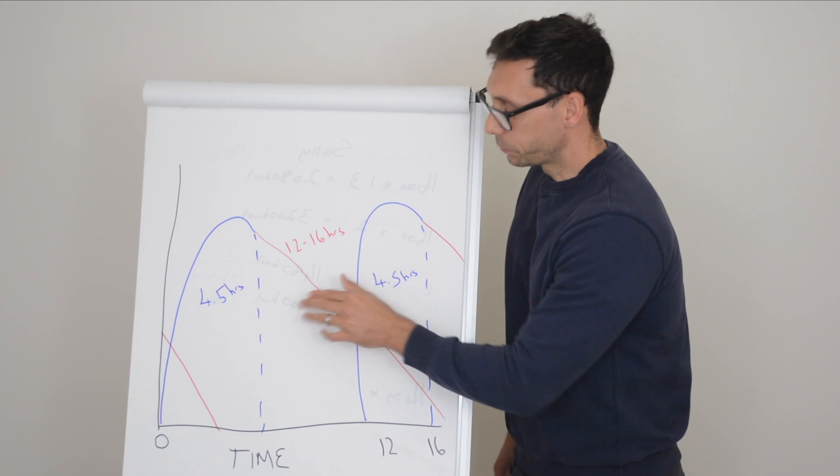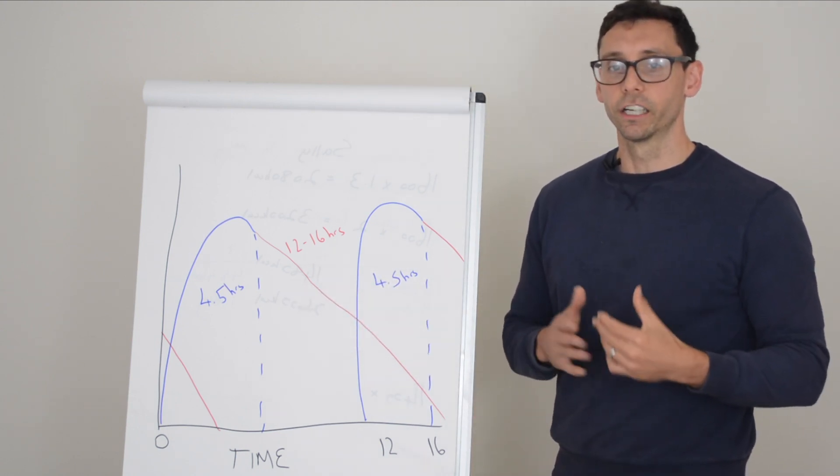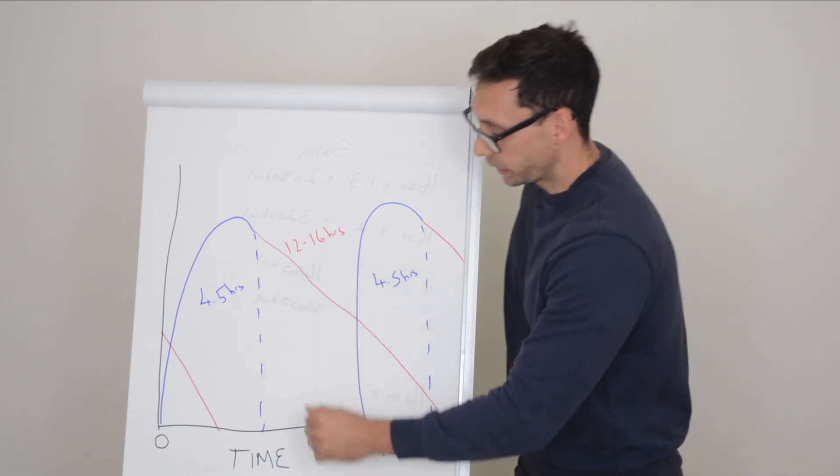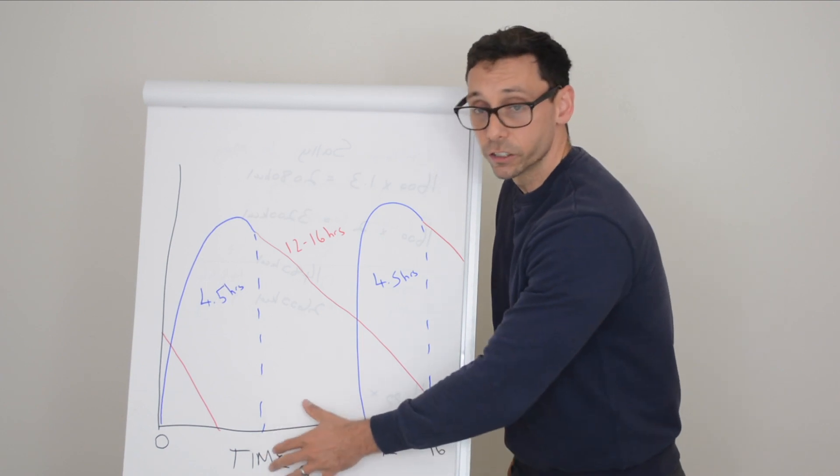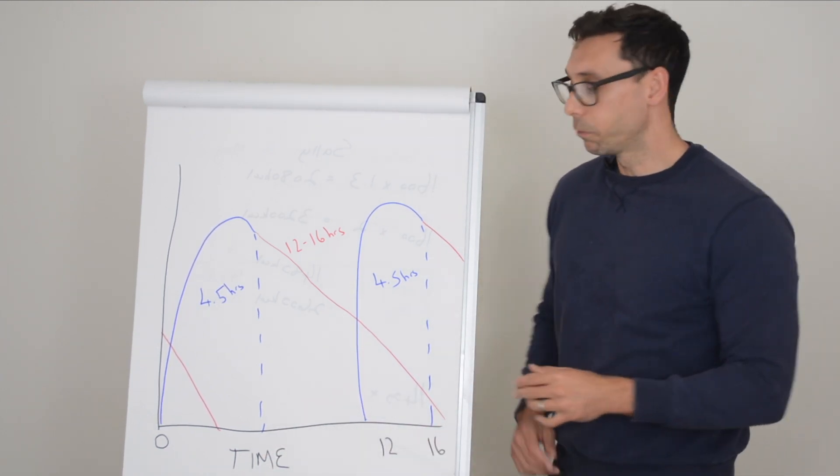So being on these types of insulins means that you're kind of locked into your current management with regards to your diabetes management and your diet. It can also mean that you might need to eat carbohydrate containing foods at lunch and also have a bedtime snack to offset the hypo risk that might come with these regimens.